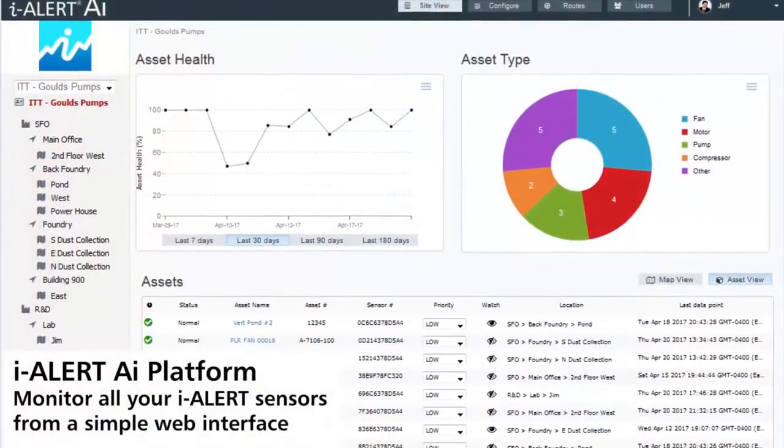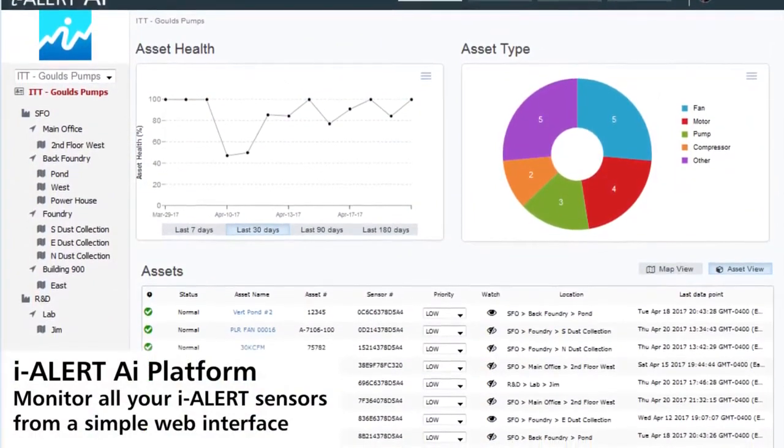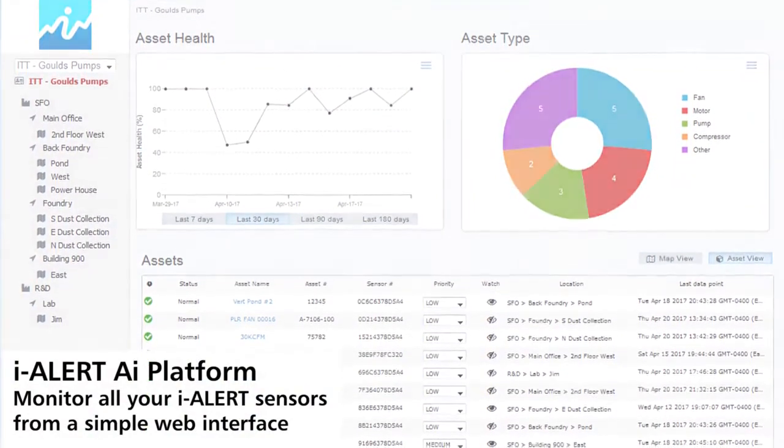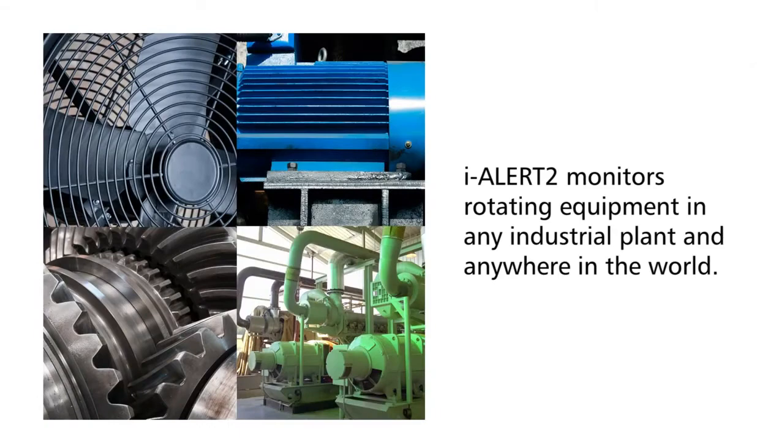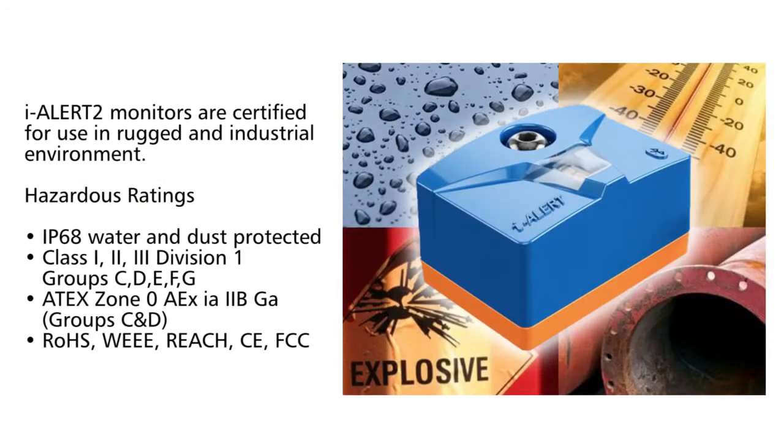All the machine data collected and stored by the iAlert 2 is easily accessible through the iAlert AI platform for vibration and temperature monitoring in a wide range of rotating equipment in any industrial plant throughout the world. The iAlert monitor is designed to put machine monitoring in the hands of everyday users.